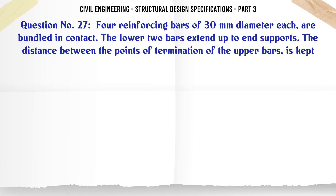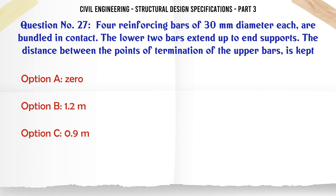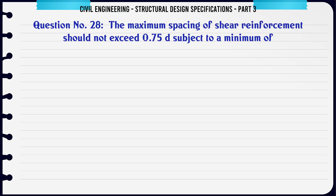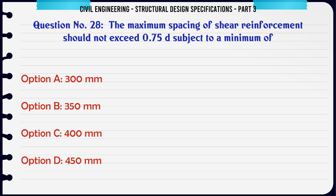4 reinforcing bars of 30 mm diameter each are bundled in contact. The lower two bars extend up to the supports. The distance between the points of termination of the upper bars is kept: a. 0, b. 1.2 m, c. 0.9 m, d. 0.75 m. The correct answer is: 1.2 m.